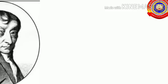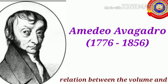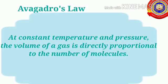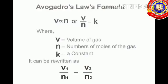It is Italian scientist Amedeo Avogadro who discovered the relation between volume and number of molecules of a gas. This relationship is known as Avogadro's law. According to Avogadro's law, at constant temperature and pressure, the volume of a gas is directly proportional to the number of molecules. As the volume increases, the number of molecules also increases. Mathematically, V is directly proportional to N, meaning V/N is a constant, so V1/N1 = V2/N2, where V represents the volume of gas and N is the number of moles of gas.